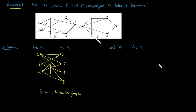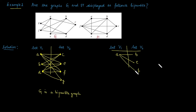Now for graph H, take any vertex — let's take A. A is adjacent with B, so place B in the opposite set. A is also adjacent with E and F, placing them in V2 as well. Next take vertex B. B is adjacent with A, already in a different set. But B is also adjacent with F, and they are in the same set. Due to this conflict, graph H is not a bipartite graph.